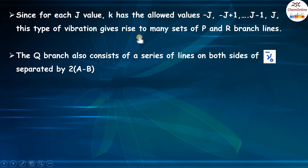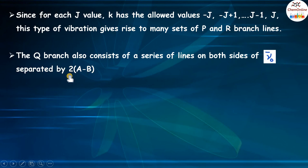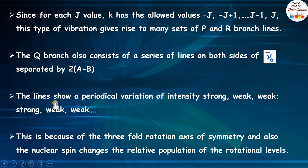Since for each j value, K has allowed values from minus j to j, this type of vibration gives rise to many sets of P and R branch lines. The Q branch consists of a series of lines on both sides of the band center ν̃_0, separated by 2(A minus B) — that is, the line spacing is 2(A minus B) instead of 2B as in linear molecules. The lines also show a periodic variation of intensity — strong, weak, weak, strong, weak, weak, etc. — due to the threefold rotation axis of symmetry, which affects the relative population of the rotational levels via nuclear spin statistics.